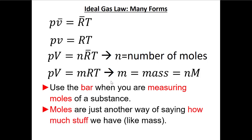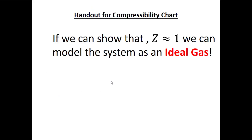We use the bar notation if we're talking about moles and drop the bar if we're talking about mass — kilograms or pound-mass. So in this class we typically won't use the bar. If we have a compressibility factor of approximately one, we can say we have an ideal gas and use the ideal gas law — typically for things that naturally occur as gases in the environment.